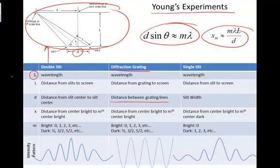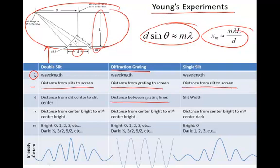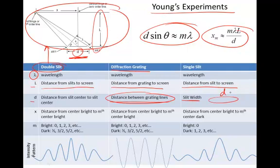Lambda is the wavelength in all the setups. L is the distance from the slits to the screen. For the diffraction grating, L is the distance from the grating to the screen, and for the single-slit it's the distance from the single-slit or hole to the screen. D is the distance from slit center to slit center in the double-slit. For the diffraction grating, again, it's the distance between the grating lines. For a single-slit, it's the size of the hole — how wide the hole is.